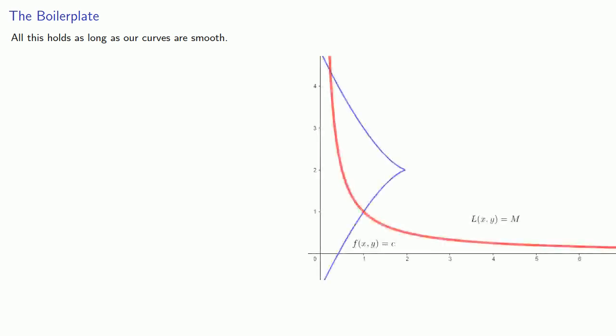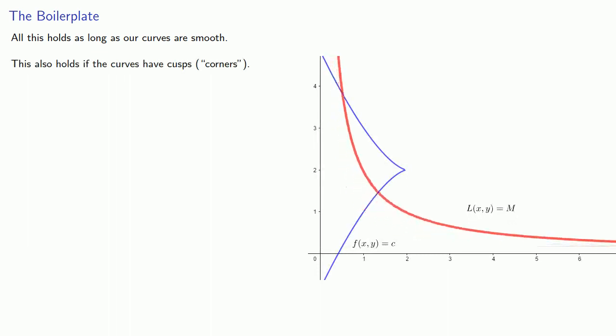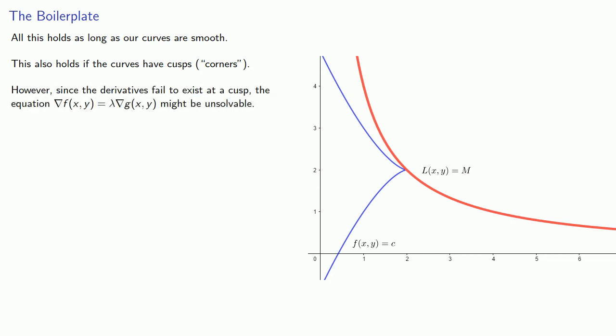Now, before we go any further, we do have to add in some boilerplate. All this holds as long as our curves are smooth. This also holds if the curves have cusps or corners geometrically. However, since the derivatives fail to exist at a cusp, the equation that we're solving, the gradient of f equals lambda times the gradient of g, might be unsolvable. We'll worry about those cases separately and focus first on the case where our curves are smooth and differentiable.